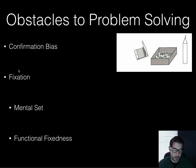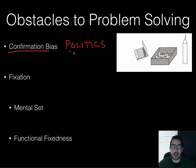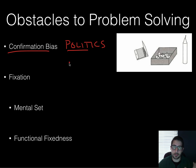Now some obstacles of problem solving. First we have confirmation bias. Confirmation bias is where we tend to look for information that supports an idea that we already have. We do this a lot with politics — whether you like or dislike the president, you tend to see things that support your position and ignore things that might go against it. We also see it with religion and other things we're passionate about. This is a problem with problem solving.